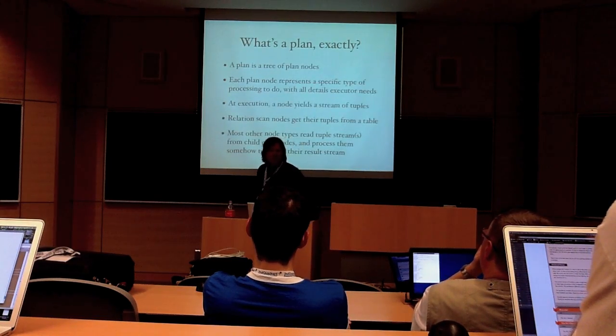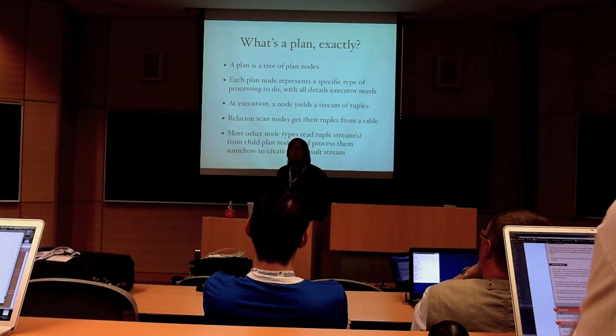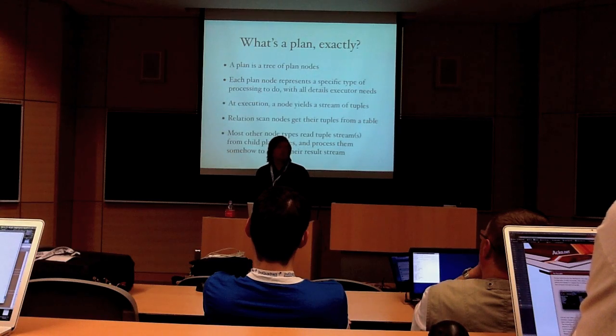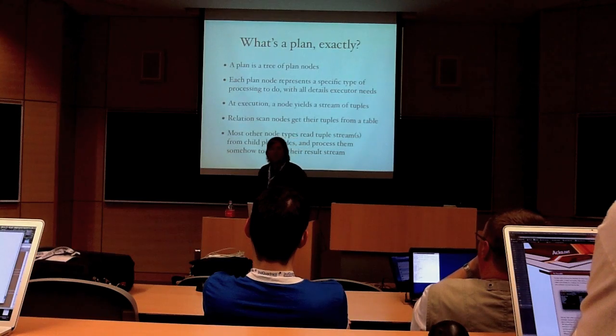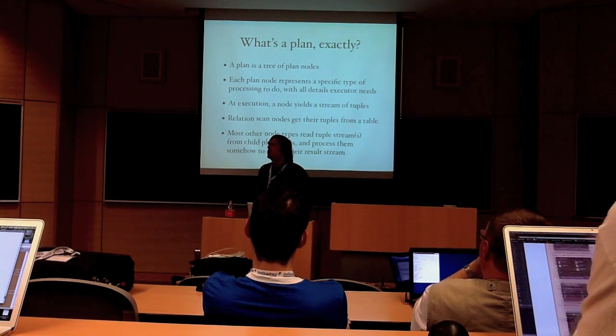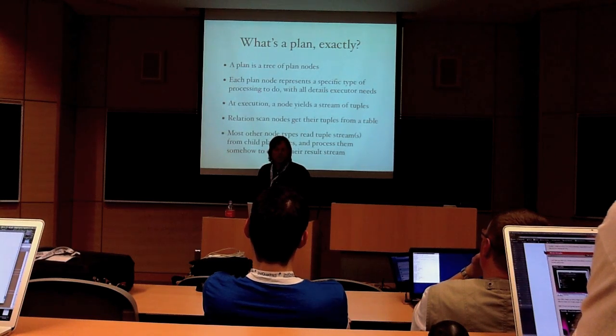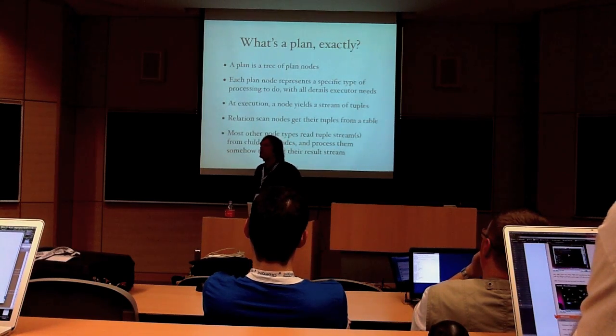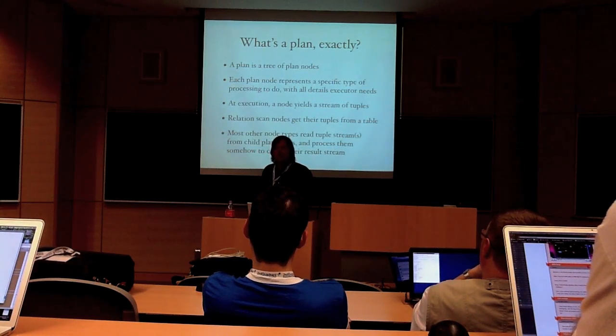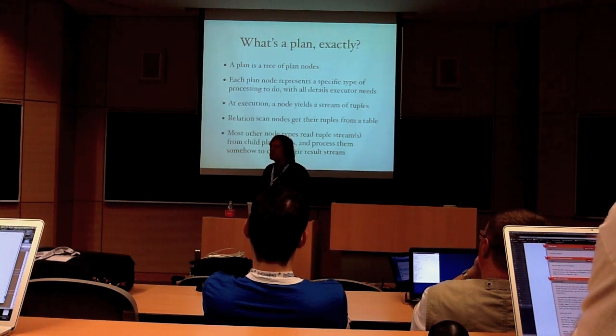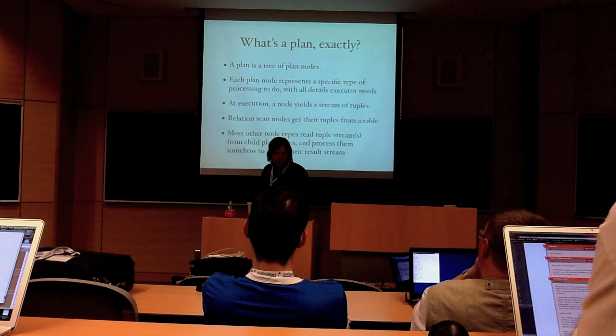And I hope this slide is not news to any of you, but just as a reminder, a plan is a tree of plan nodes, each one representing some specific processing step. Now, at execution, that node is going to yield a stream of tuples, which are either the actual output of the query or the data being passed up to a higher-level query. And at the union relation scan nodes, of course, will get their tuples directly from a table. Most other node types are reading input from a child plan node and processing something that can somehow produce their own output stream.